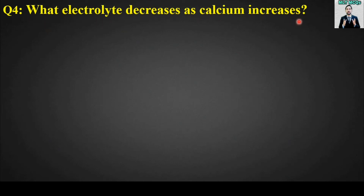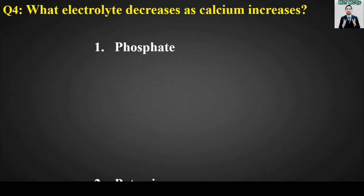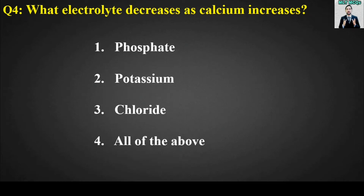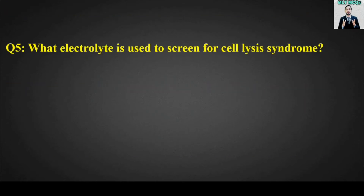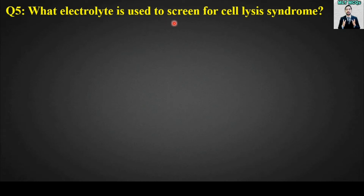MCQ number four: What electrolyte decreases as calcium increases? Options are: phosphate, potassium, chloride, or all of the above. The right answer is option number one — phosphate. The phosphate electrolyte decreases as calcium increases.